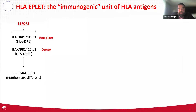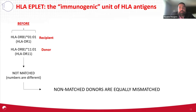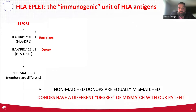In the past, when comparing recipient and donor, we looked at their HLA nomenclature number. For example, a recipient with DR-01-01 and a donor with 11-01 — we said they are no match. We considered every non-match donor to be equally mismatched to the recipient. We know now that this is not entirely true, because there is a degree of mismatch between patient and donors, and the eplet is what gives you that degree of mismatch.